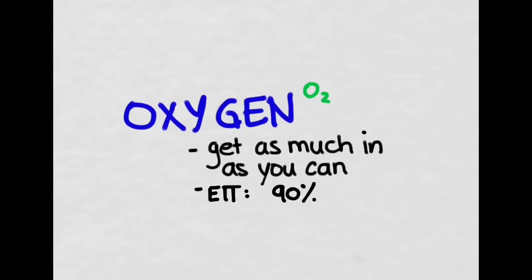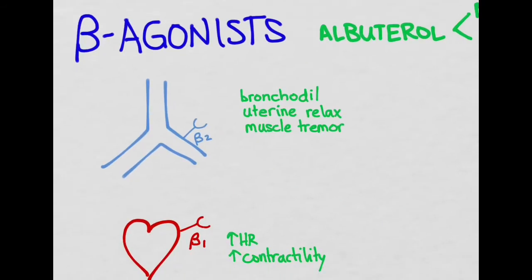Next, let's talk about the beta agonists. The main one that we talk about here is albuterol. It's going to affect beta 1 and beta 2 receptors. Beta 1 is on the heart. It increases heart rate and contractility. And beta 2 is on the bronchial airways. This is what we want. You can see it causes bronchodilation. It also causes some muscle tremors, so you can see that they get shaky when they're on albuterol.